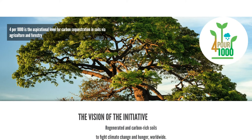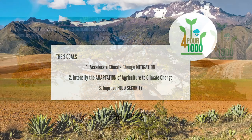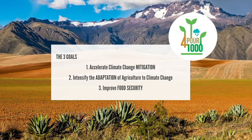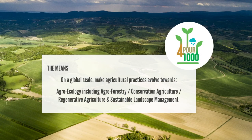In productive lands that we continue to use for food and fibre production, the vision of the Four Per Mil initiative is regenerated and carbon-rich soils to fight climate change and hunger all around the planet. The three goals are: to accelerate climate change mitigation actions; to intensify and speed up the adaptation of agriculture to climate change; and to improve food security. These goals are complementary — not in contradiction — and can be achieved simultaneously using different approaches in different parts of the world.